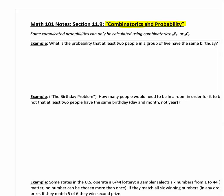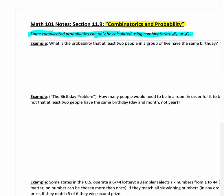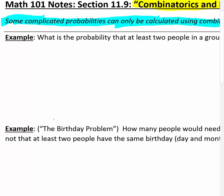This next section combines combinatorics - combinations and permutations - with probability. Some complicated probabilities can only be calculated using combinatorics. One of the most interesting things in probability is what's called the birthday problem.